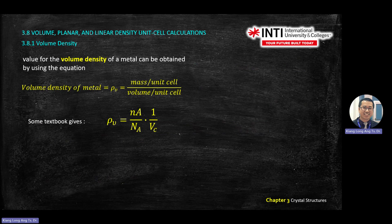Some textbooks give you a formula to calculate mass. Mass can be calculated using N times A divided by Avogadro's number. A is the atomic mass number; N is the number of atoms. VC is the volume of the cube, where you need to get A to calculate the cube. BCC has one equation for A with R. FCC also has something with R. Don't confuse between these two. Memorize examples of BCC and FCC — three examples for BCC, three examples for FCC.